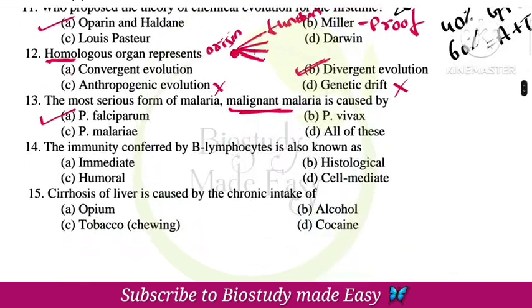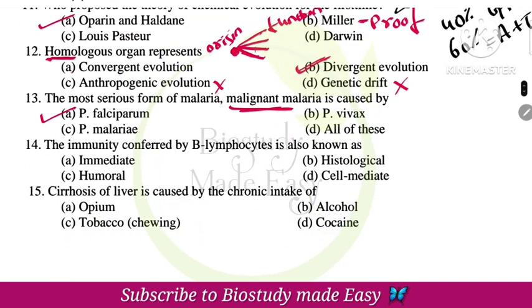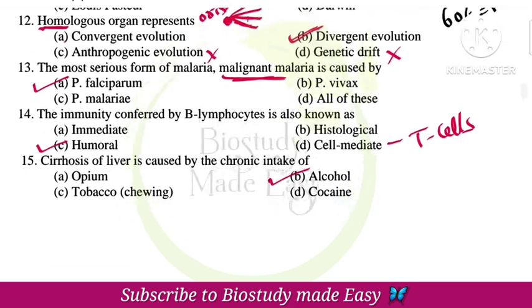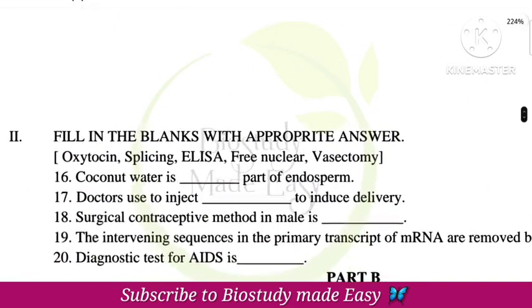The immunity conferred by B lymphocytes is also known as humoral immunity. Cell-mediated immunity is provided by T cells. Cirrhosis of the liver is caused by chronic intake of alcohol — alcohol causes liver damage leading to cirrhosis of the liver. Now let's look at the fill in the blanks.